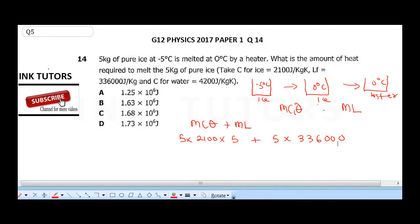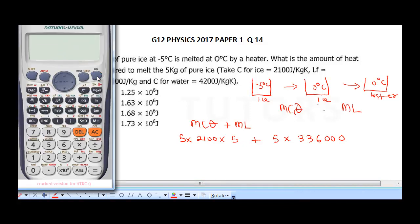So we are going to multiply this with our calculator, so that will give us 5 times 2100 times 5.